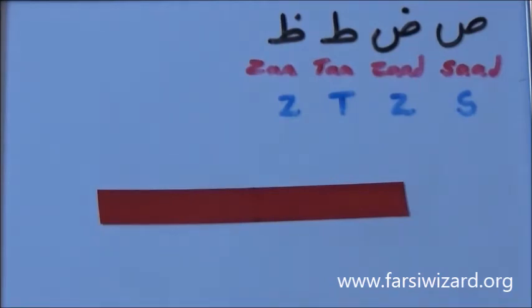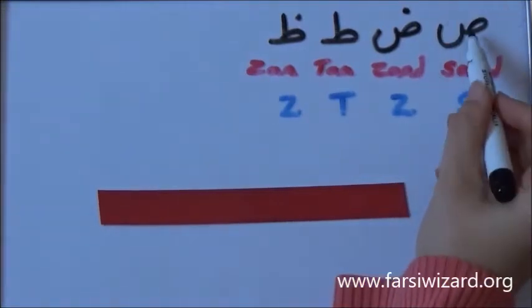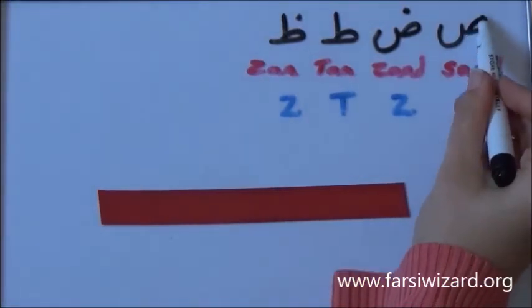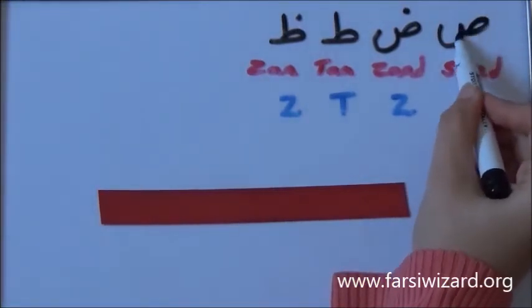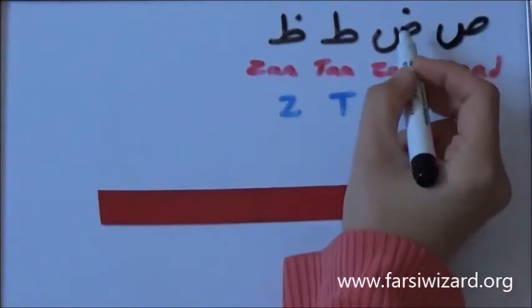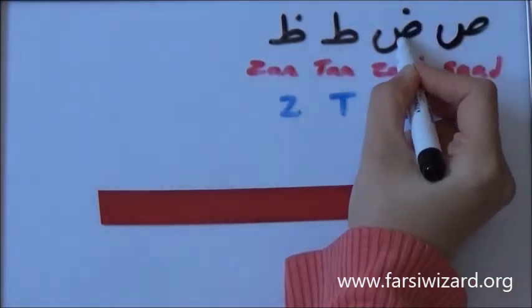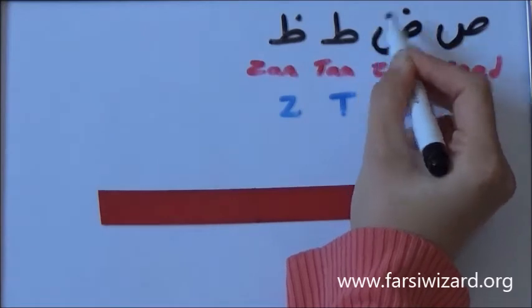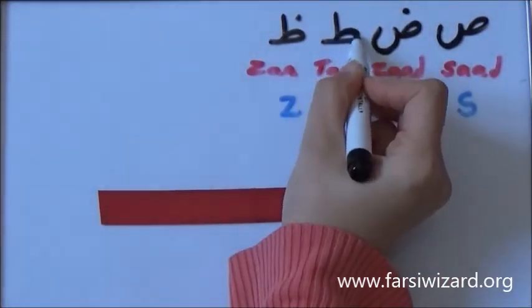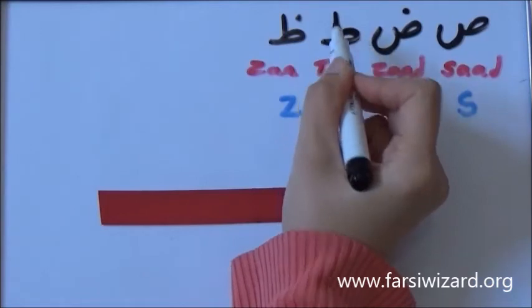Okay, so the first one, Sod, as you can see, is written in one stroke. Same way, Zod, with one dot on top. Then we have Taw and Zaw, with one dot on top.